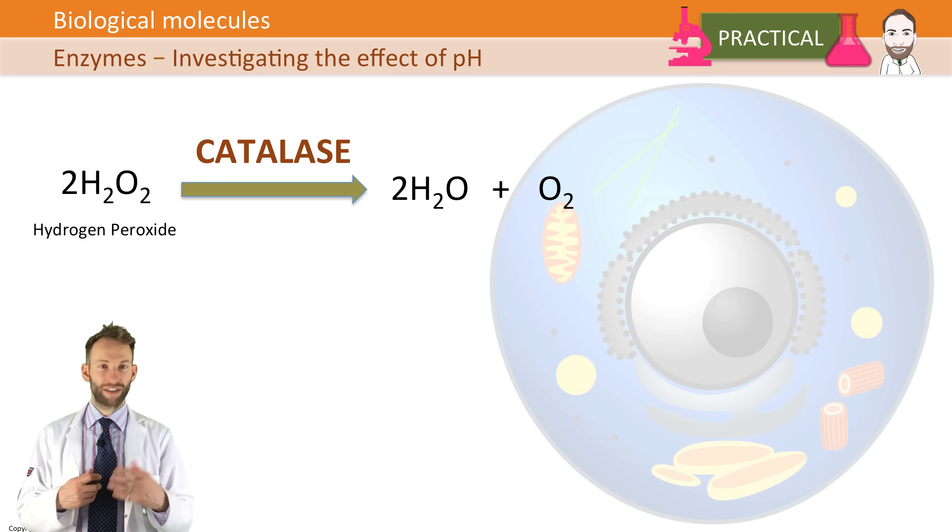Catalase is an enzyme that we have in our cells that breaks down hydrogen peroxide. Hydrogen peroxide is a waste product of metabolism and it's very, very toxic, so it needs to be broken down. You have catalase in your cells, especially lots in your liver, in order to break down hydrogen peroxide. It breaks down hydrogen peroxide into water and oxygen.